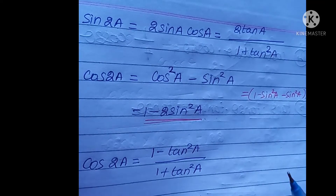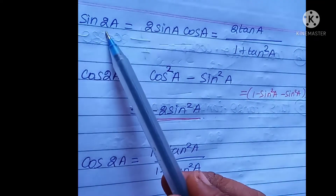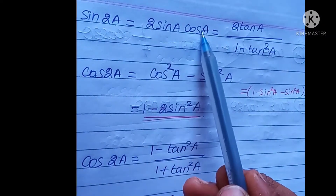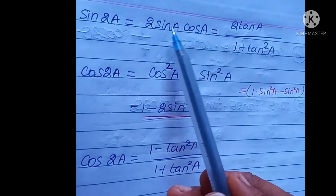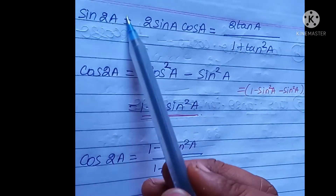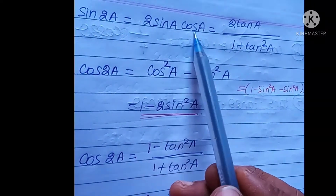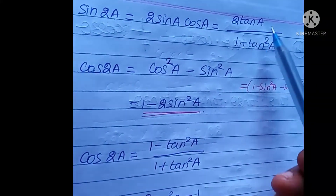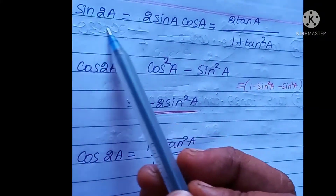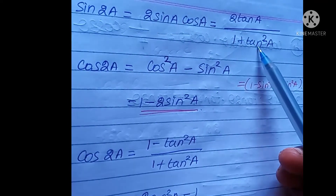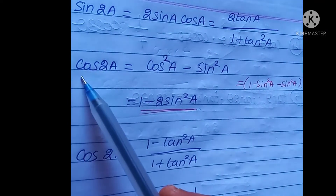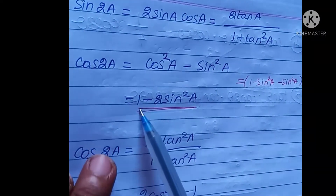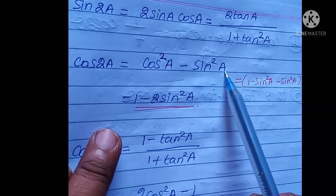Next, where there are double angle formulas. sin2A is equal to 2 sinA cosA, which is also equal to 2tanA divided by (1 + tan²A).